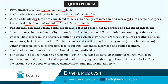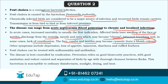Foul cholera can cause mortality and range from acute septicemia — that is blood poisoning — to chronic and localized infections. In acute cases, one can see increased mortality. Symptoms include swelling of the face or wattles, discharge from the nostrils, mouth and eyes which may become cheesy, labored breathing, and in some cases lack of coordination. In few cases the face, combs and wattles become cyanotic — that is they turn bluish in color. Other symptoms include depression, loss of appetite, lameness, diarrhea, and ruffled feathers.